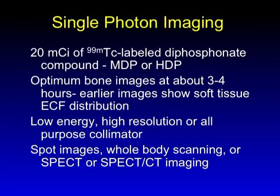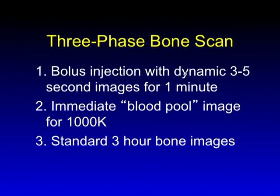You can do SPECT imaging or planar imaging. It's mostly still standard to do planar imaging, although one could argue in this era why we're doing that. A variant is the three-phase study, which simply captures early information about blood flow and what's going on in bone and soft tissue. The first phase is a dynamic sequence — bolus injection, image for about a minute, rapid sequence — simply telling us about blood flow, nothing about tracer uptake per se.